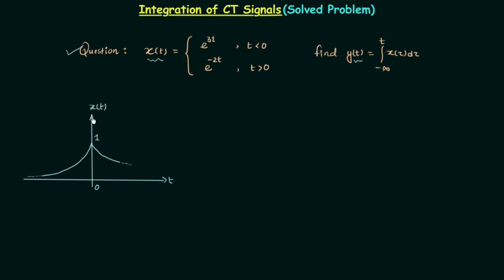So this is how the waveform of signal X(t) looks. Recalling from the last lecture, I explained 3 different methods to integrate. In method 1 we directly obtained the integrated waveform using graphical integration, but there is a limitation: graphical integration is only applicable to signals related to step functions — meaning rectangular signals. Since this signal is not rectangular, we cannot use method 1.